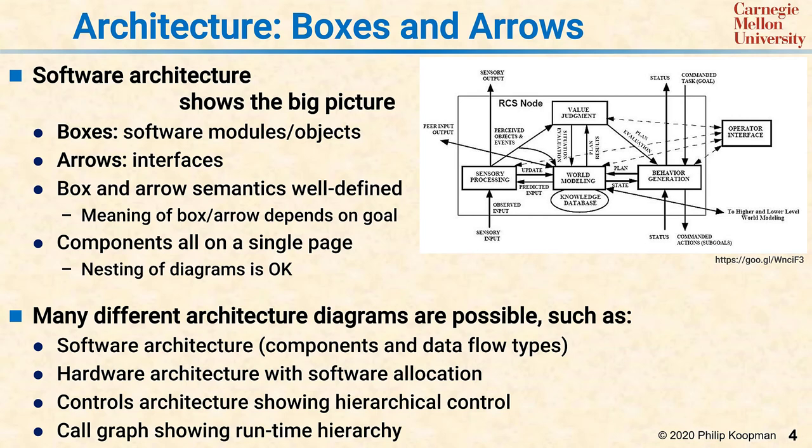There are many different types of architecture diagrams. For example, a software architecture, which might have components and data flows, a hardware architecture that shows, for example, how the software components are allocated to the hardware.